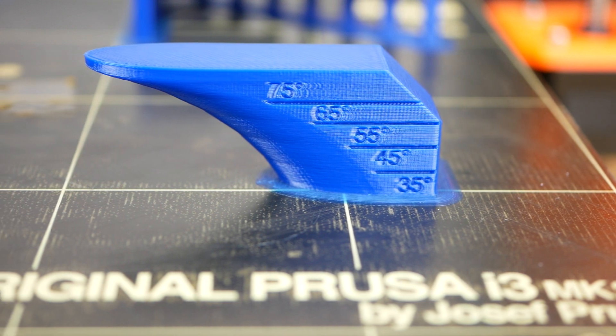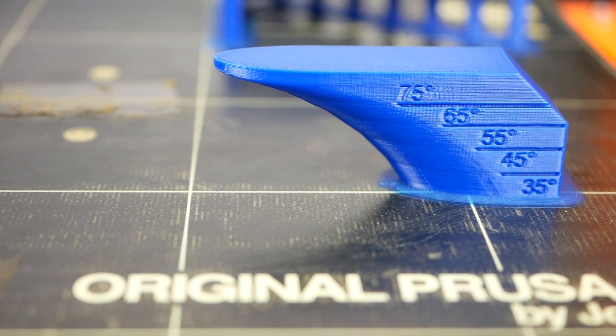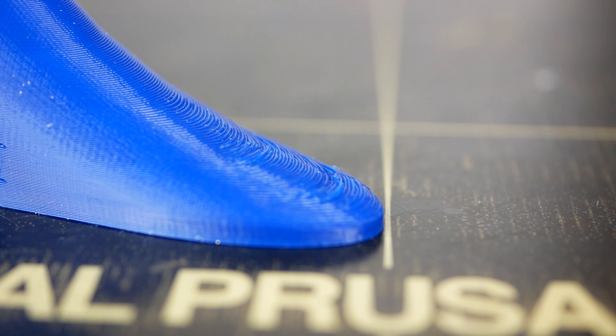The Polylight PLA was able to handle overhangs very well, and only at 75 degrees some artifacts started to show up.